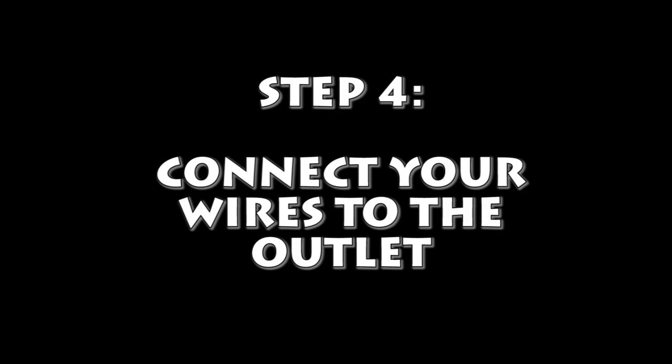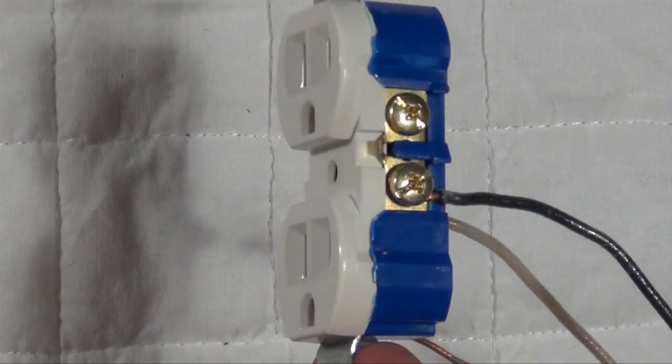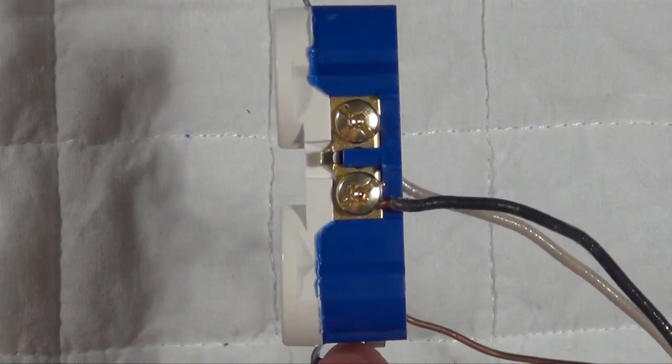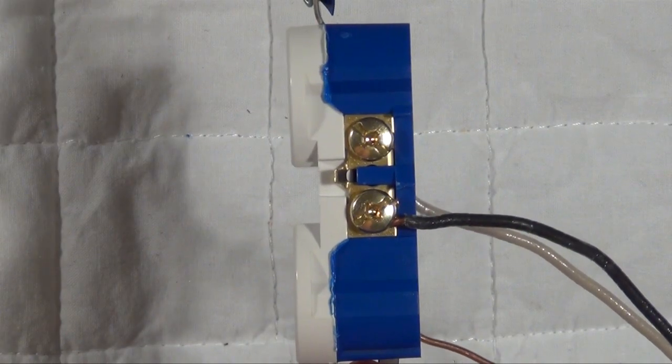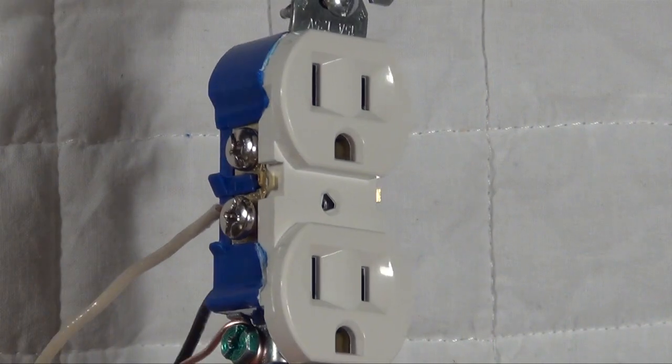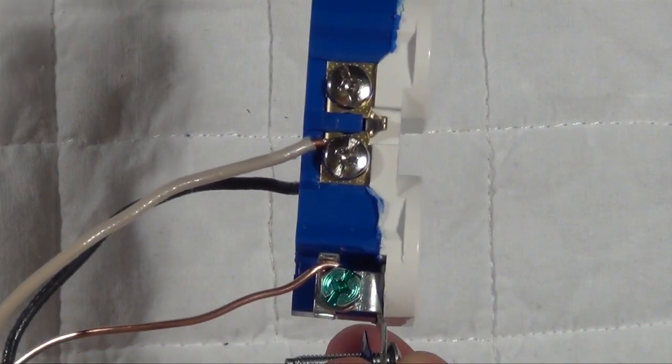With your loops created, you can match up your wires to the appropriate screw. Under most, but not all, conditions, your black wire will loop around the brass-colored screw, your white wire will loop around your silver-colored screw, and your bare ground wire will loop around the green screw.